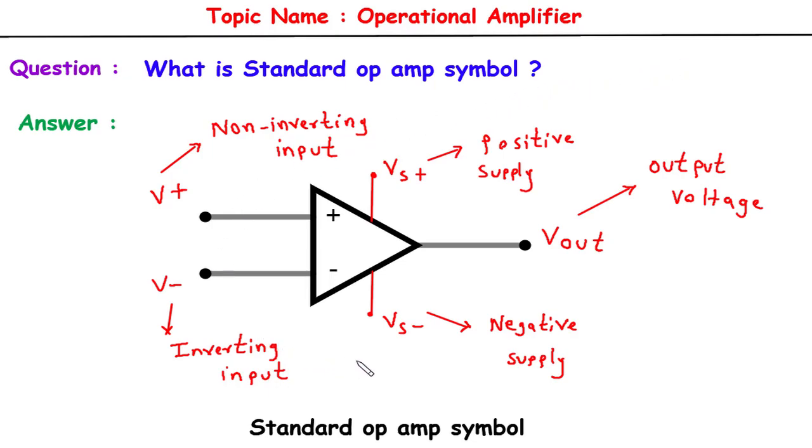In this particular video, we'll explore the standard symbol used to represent op amps in circuit diagrams. This symbol features the non-inverting terminal positioned on the upper side, the inverting terminal on the lower side, and symbols representing the positive and negative supply voltages, as well as the output voltage, Vout.